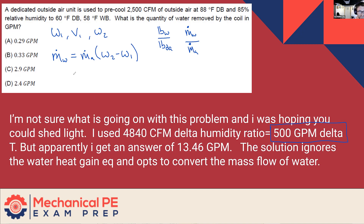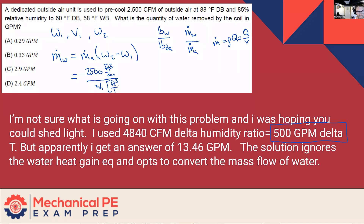In terms of actually applying it, we have the volume flow rate of air — in this case 2500 CFM — and we divide that by the specific volume to get mass flow rate, since mass flow rate equals density times volume flow rate, or equivalently volume flow rate divided by specific volume. Specific volume has units of cubic feet per pound of dry air. Multiplying by the humidity ratio delta, which has units of pounds of water per pound of dry air, and canceling cubic feet and pounds of dry air, you end up with pounds of water per minute.